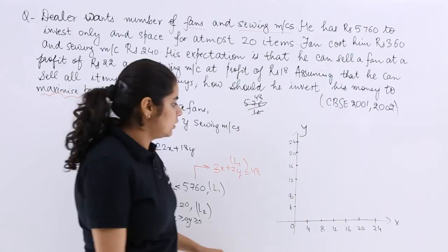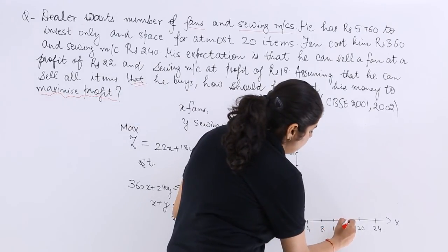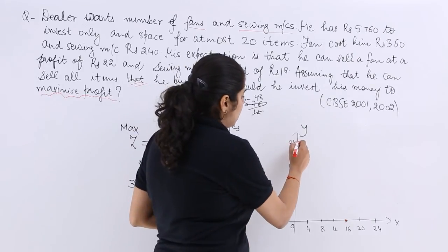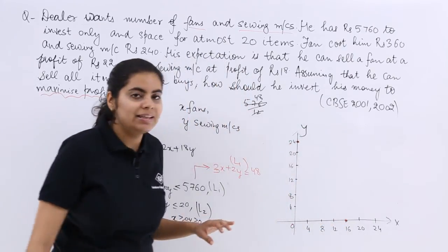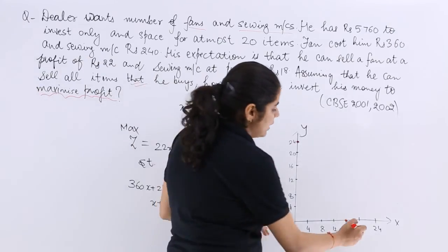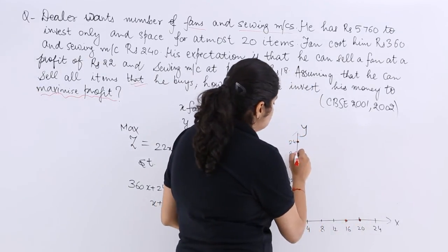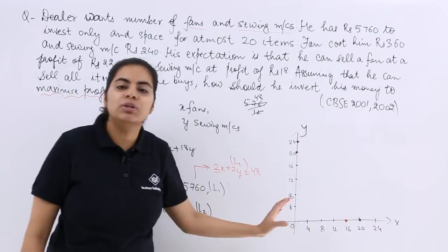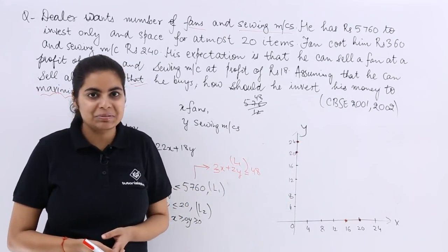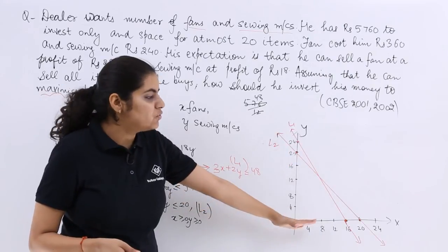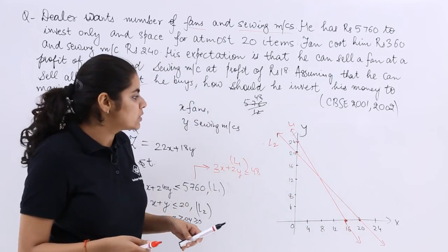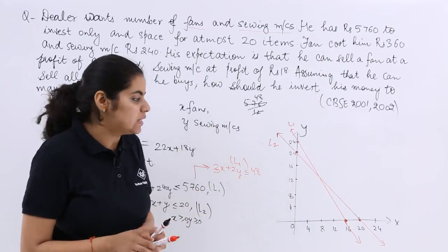For L1, when x = 0, y = 24, and when y = 0, x = 16, since 3×16 = 48. So we plot 16 on the x-axis and 24 on the y-axis for L1. For L2, both intercepts are 20, so we plot 20 on both axes. We join these points to get the two straight lines.